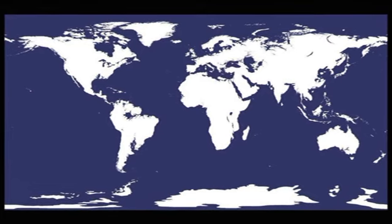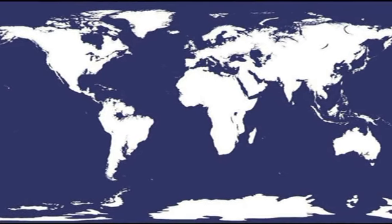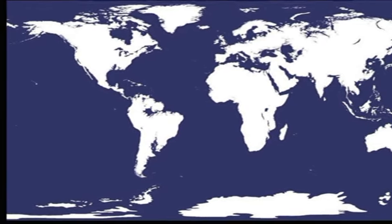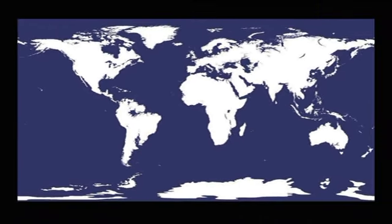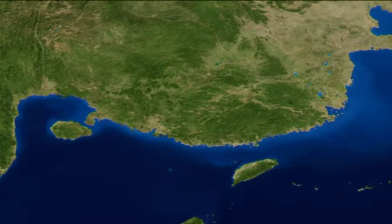Geography is the study of location and distribution of living things and the Earth's features in which they live. It may be land or water. Geographers also examine where Earth's features are located, how they came into existence and why their location is important. Geographers search for patterns in the distribution of features over the Earth's surface and seek to discover the reasons for those patterns.